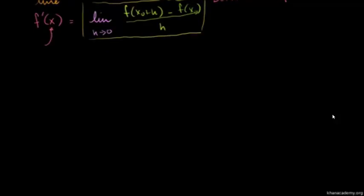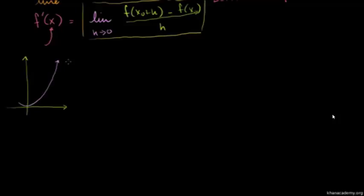First I'll do a particular case where I want to find the slope at exactly some point. Let me draw my axes. And let's say I have the curve y is equal to x squared. This is my y-axis, this is my x-axis. And I want to know the slope at the point x is equal to 3. You can imagine a tangent line that goes just like that and would just barely graze the curve at that point. But what is the slope of that tangent line, which is the same as the slope of the curve right at that point?